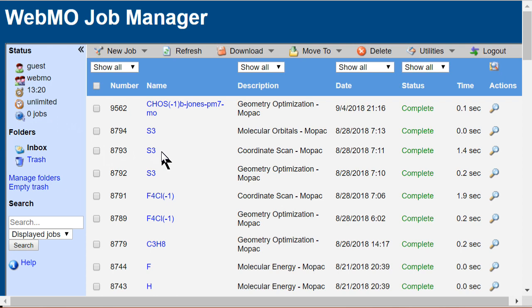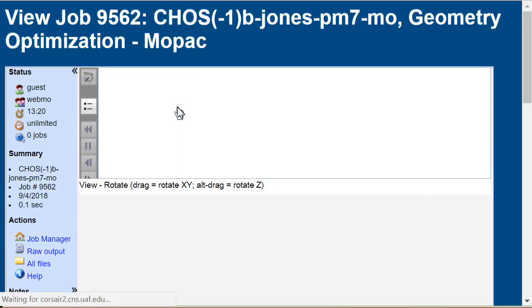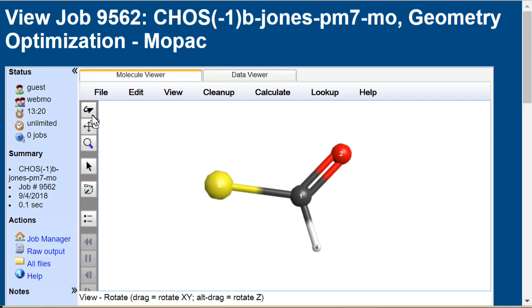When the job is complete, click the job name to see the results page. So, it did optimize to a trigonal planar, but the bond angles differ from the ideal.